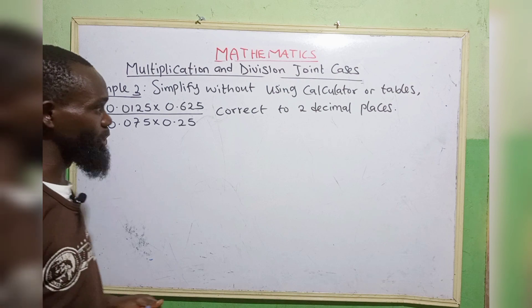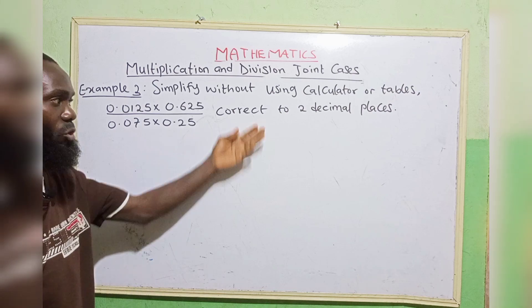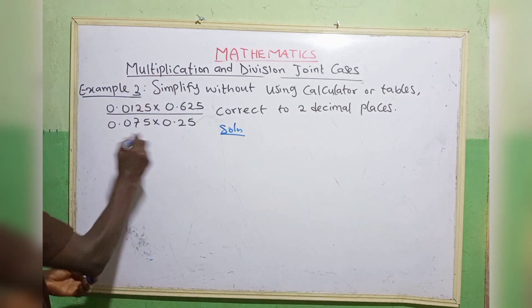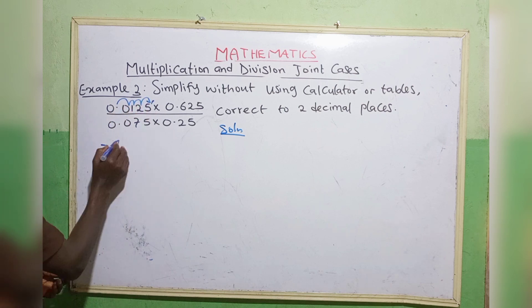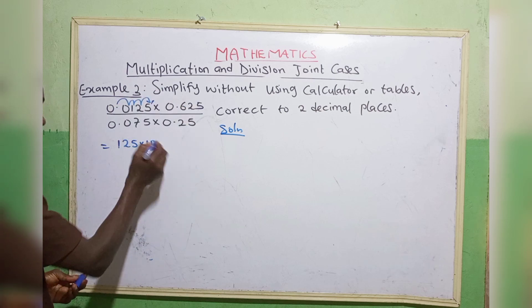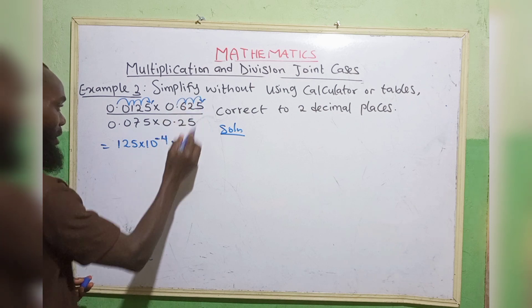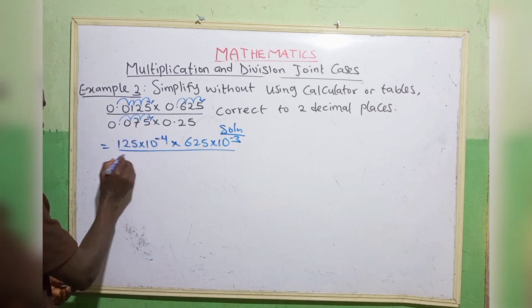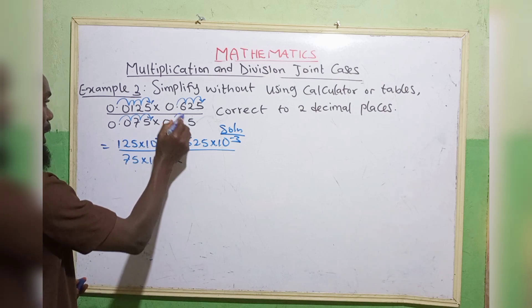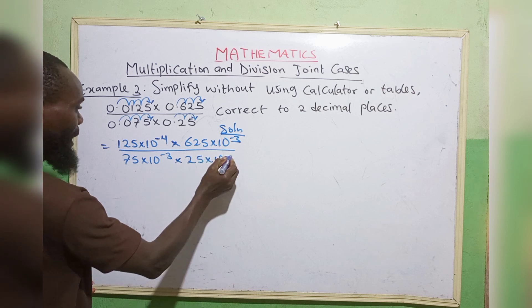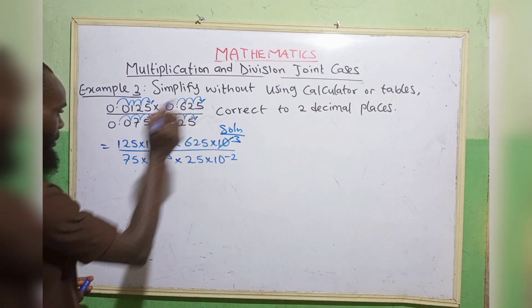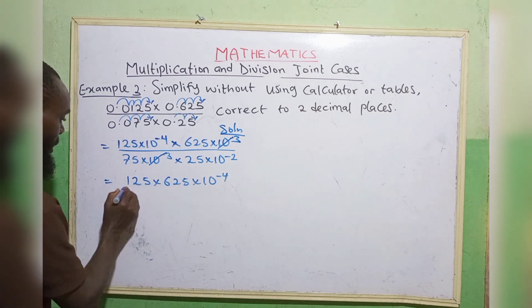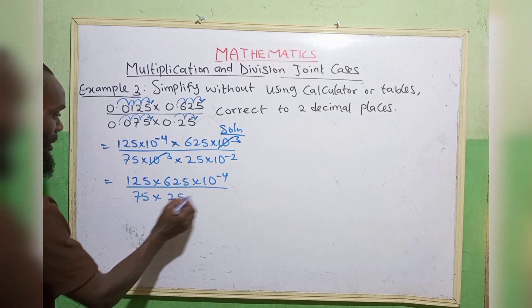Example 3: Simplify without using a calculator or tables, giving values correct to 2 decimal places. As stated earlier, we move the decimal point away completely. Moving 1, 2, 3, 4 — we have 125 times 10 to the power, moving backward, negative, minus 4. Moving 1, 2, 3 — 625 times 10 to the power minus 3. Divided by: moving 1, 2, 3 — 75 times 10 to the power minus 3. Times: moving 1, 2 — 25 times 10 to the power minus 2.